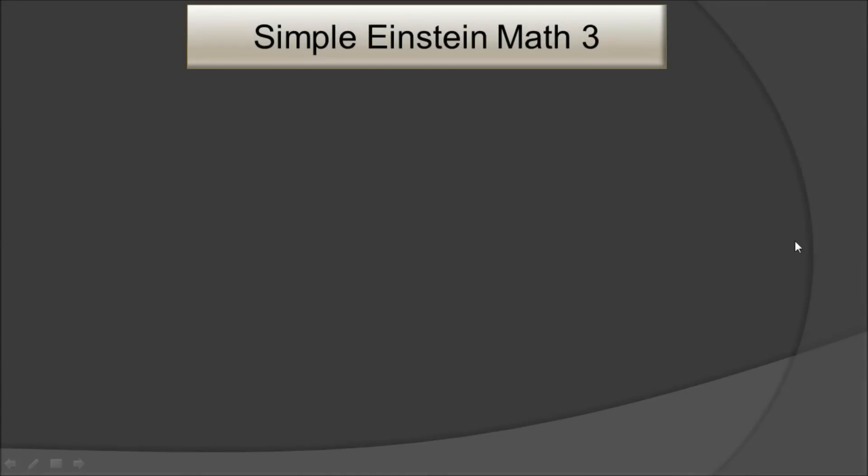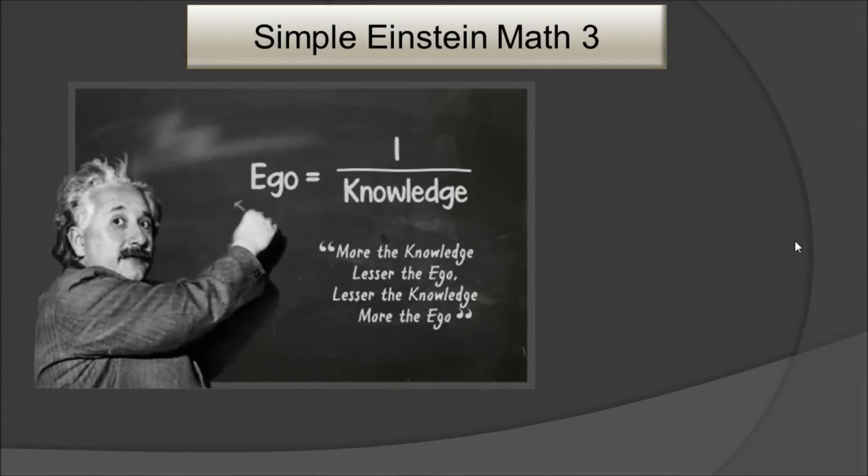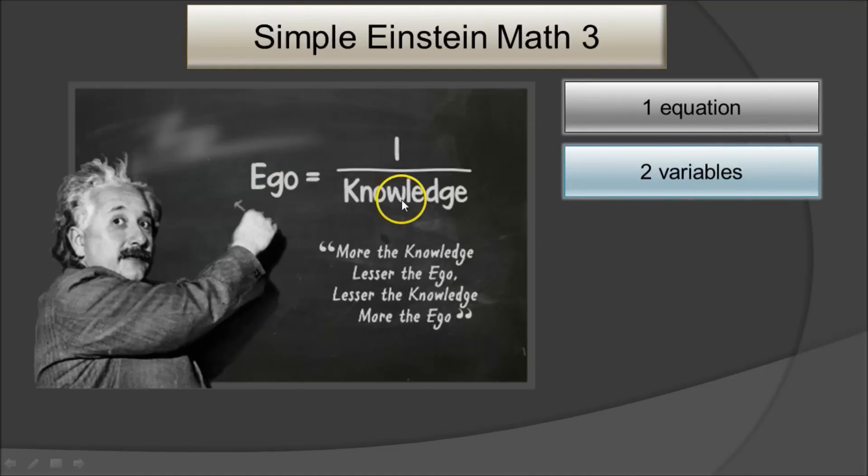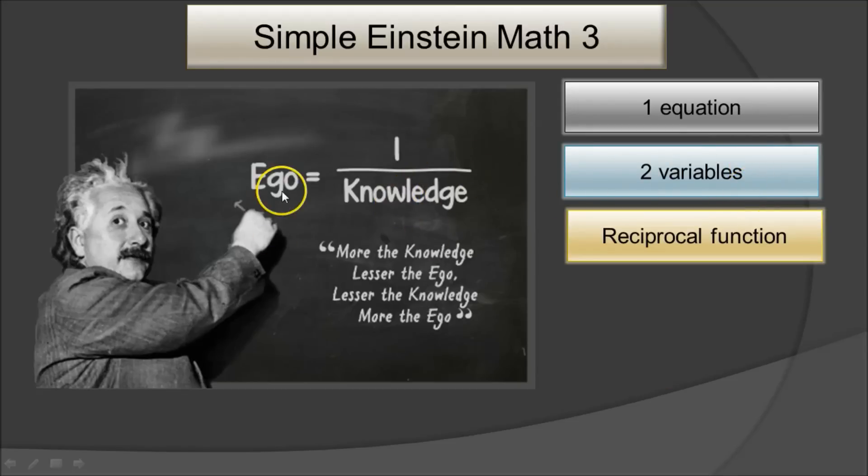The third example: ego is inversely proportional to knowledge. The more knowledge there is, the smaller the ego. The smaller knowledge we have, because of the inverse function, the bigger ego you have. In this case again, one equal sign, one equation. Two variables: ego and knowledge are the variables. Reciprocal function—if ego is Y and knowledge is X, then Y equals one over X.